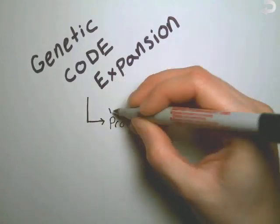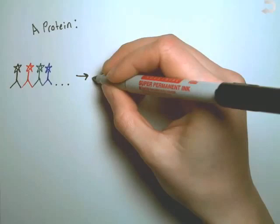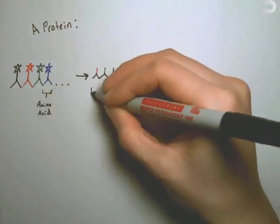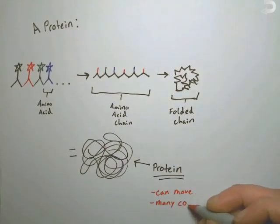But first, let's talk about proteins. A protein is basically a long chain of amino acids that folds upon itself into a 3D jumbled up glob. This glob is constantly rearranging its shape and adopting thousands of different conformations.